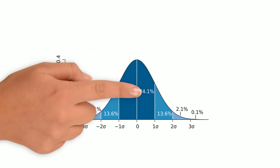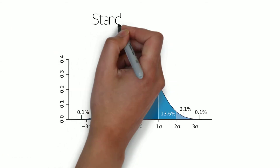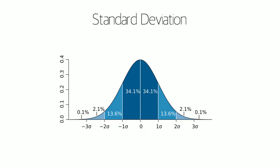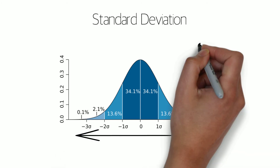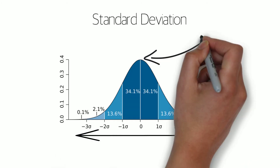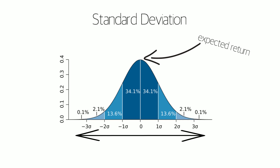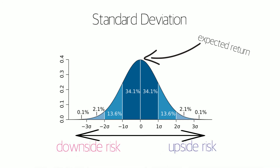It is important to note that standard deviation, which is used to measure risk in both the Sharpe Ratio and the Roy's Safety First Criterion, calculates the volatility of a portfolio around the expected return, meaning that it captures not only the downside risk, but also the upside risk of the portfolio. However, the reality is that most of us are not too concerned about upside risk.